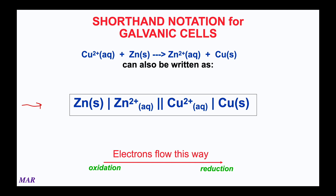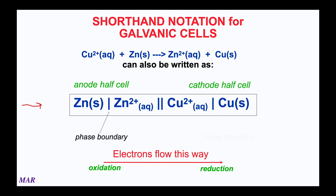That means the anode is on the left and the cathode is on the right. The anode half-cell would be zinc going to zinc 2+, a solid initially going to a zinc 2+ solution where water is the solvent. The cathode would be copper 2+ gaining two electrons, going to copper metal.